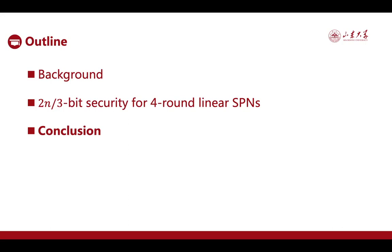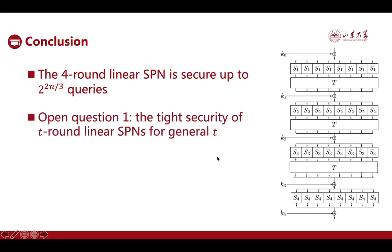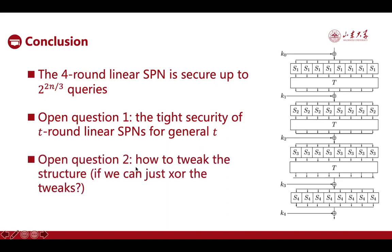To conclude: with four rounds and a moderately stronger linear permutation layer, a linear substitution-permutation network is secure up to 2^(2N/3) queries, which overcomes the birthday barrier. We remark that the security of T-round linear SPNs for general T remains open, and whether tweaks can be mixed into the construction to ensure beyond-birthday-bound security also remains unknown.